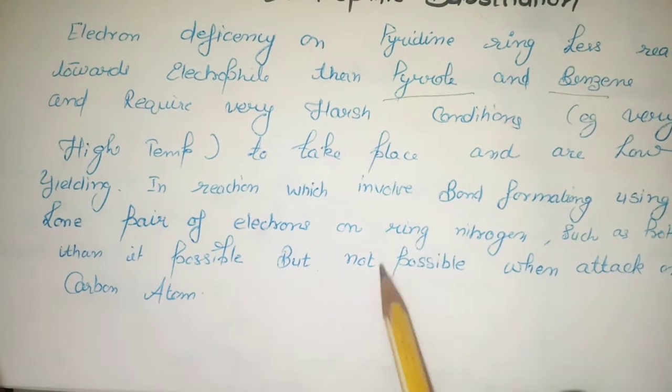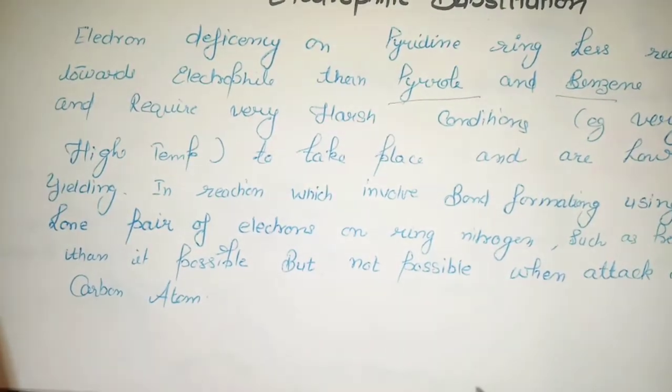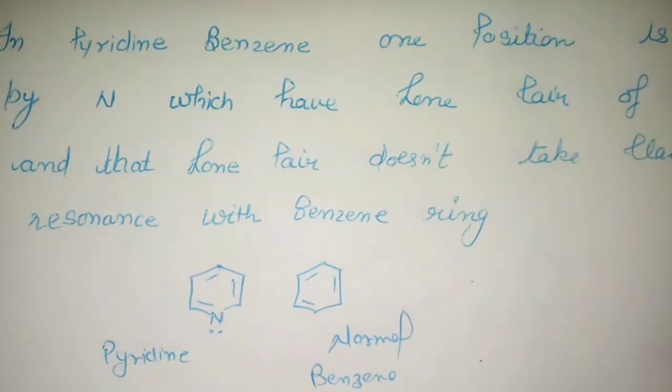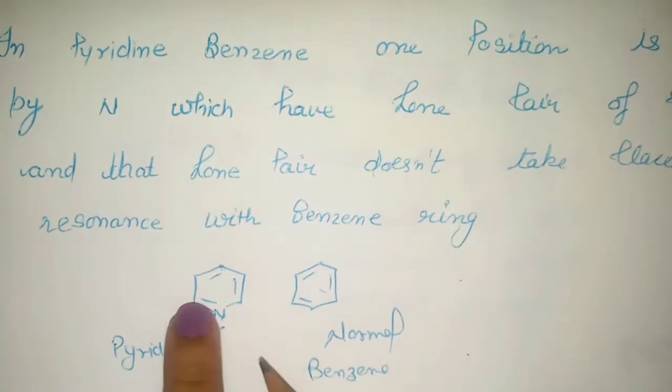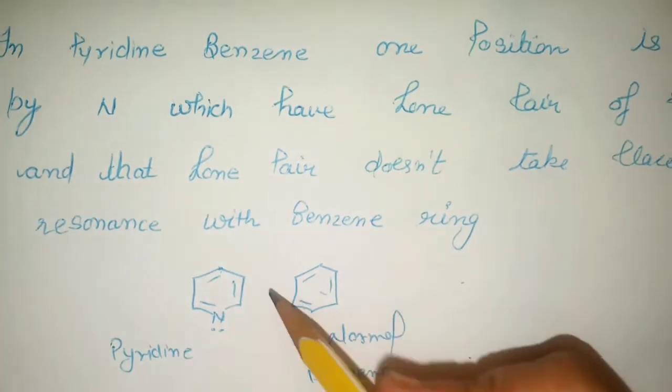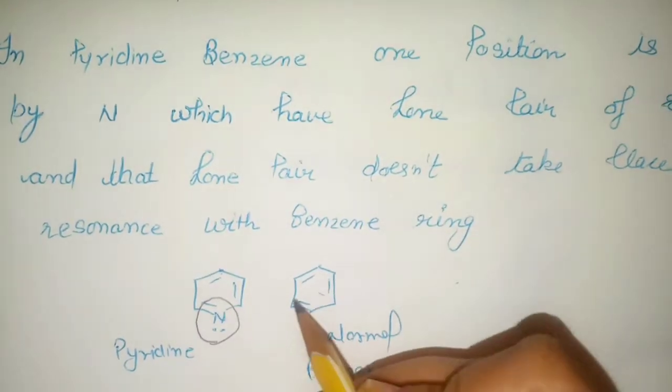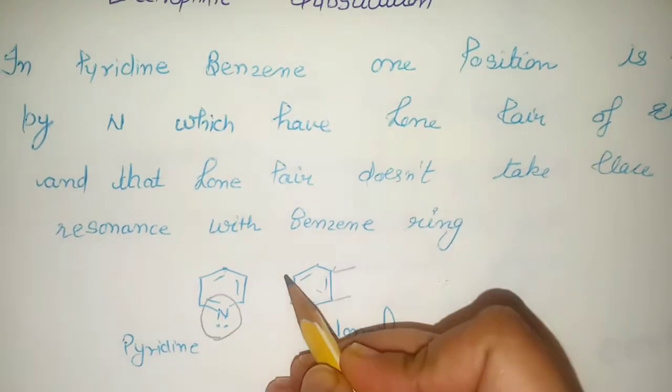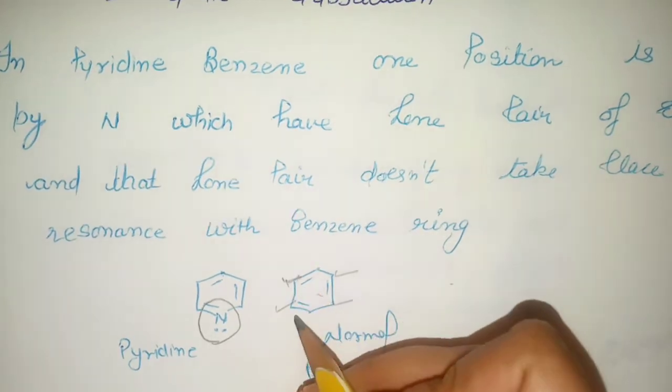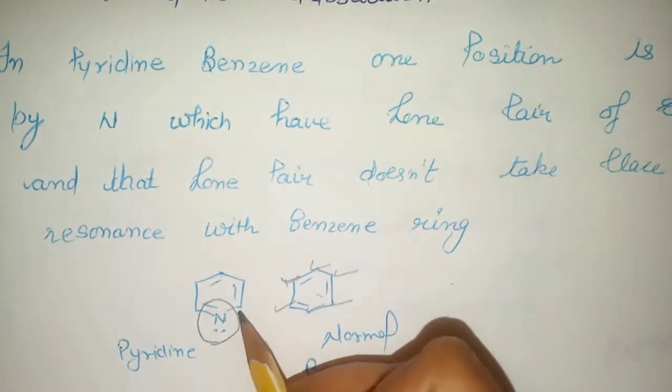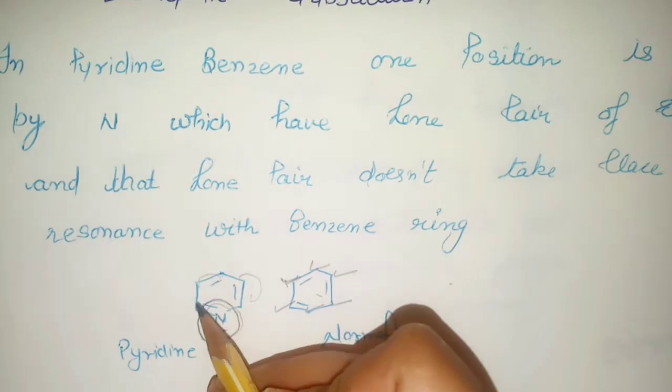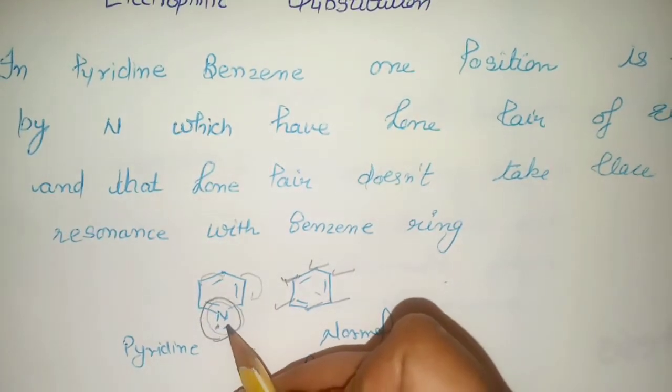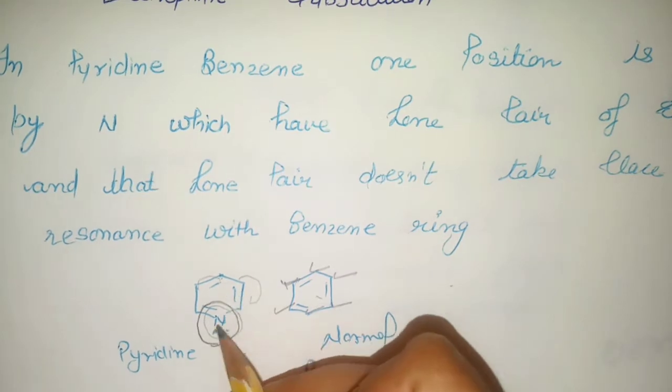If electrophilic substitution doesn't occur, then we have a problem. We have said that it's aromatic. If it's aromatic, then it has to pass electrophilic criteria. So we need harsh conditions, bond formation and breaking, with electron pair involvement which is not our main motive.